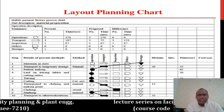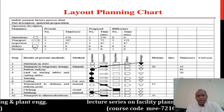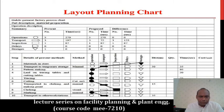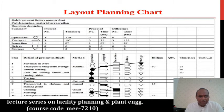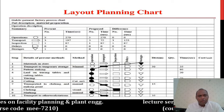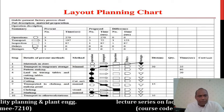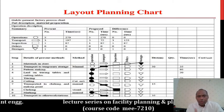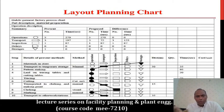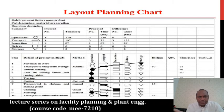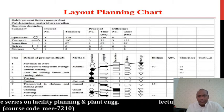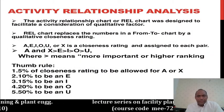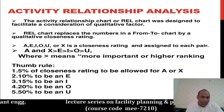This is a layout planning chart — basically an effective process chart in which operations, transportation, inspection, delay, and storage are all involved, tracking the flow from raw material to finished products as a line diagram.